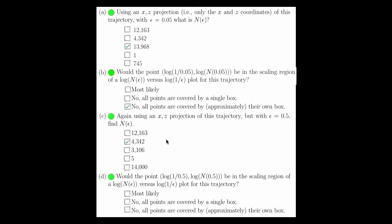Since we had 14,000 points in the trajectory, and we had 4,342 boxes, it's most likely the case that this point would be in the scaling region. Certainly, all points are not covered by a single box. They're covered by 4,342 boxes. And not all points are covered by approximately their own box. Many boxes are shared. So it is likely that this point would be in the scaling region.